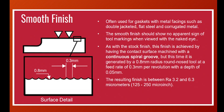The last type is smooth finish. This finish shows no visually apparent tool markings. Smooth finishes are typically utilized for gaskets with metal facing, such as double jacketed flat steel and corrugated metal. The smooth surface depends on the flatness of the opposing faces to effect a seal. This is typically achieved by having the gasket contact surface formed by a continuous phonographic spiral groove generated by a 0.8 mm radius round nose tool at a feed rate of 0.3 mm per revolution with a depth of 0.05 mm.